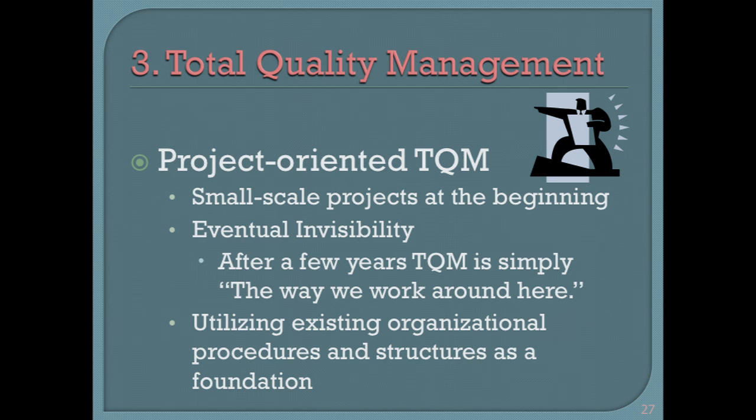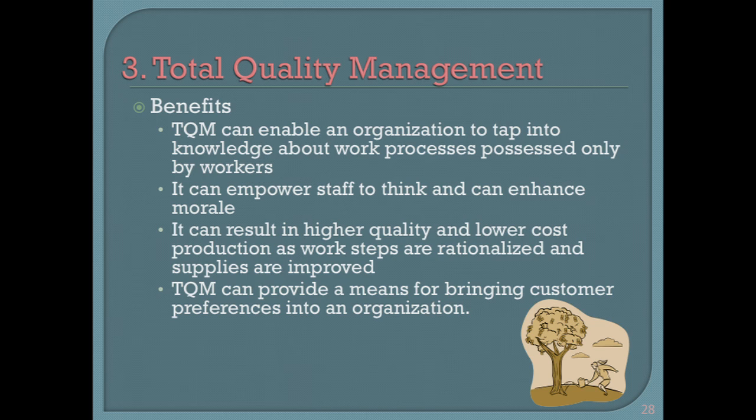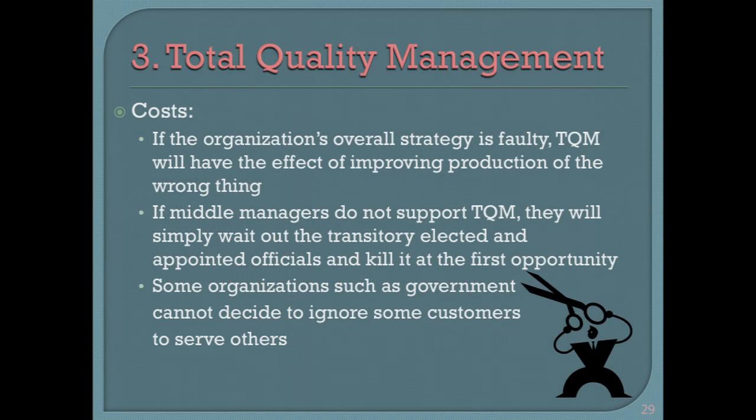What you want to do with these kinds of processes is make it just part of how people think about their work — I wouldn't imagine a project where I didn't talk to my suppliers, didn't think about work processes, didn't think about my customers. The benefit of TQM is that it allows an organization to tap into the knowledge that only the workers know. The workers are the experts at the work; they know what's going on because they're doing it. You have to convince them they're not going to be punished for telling the truth. On the other hand, if the overall organization strategy is faulty, TQM can have the effect of improving the production of the wrong thing — it's like rearranging the deck chairs on the Titanic.